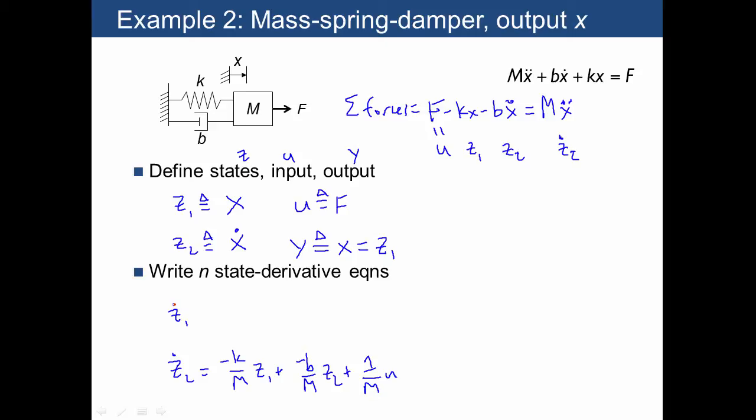We also need a state derivative equation for z1 dot. z1 dot is just going to be x dot, which actually is just equal to z2. So I'm going to write the equation this way: 0 times z1 plus 1 times z2 plus 0 times u.